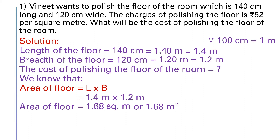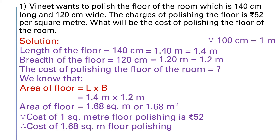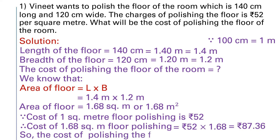So area of the floor = 1.68 m². Now we find the cost of polishing. If the cost of polishing 1 square meter is Rs. 52, then cost of polishing 1.68 square meters = Rs. 52 × 1.68 = Rs. 87.36. So the cost of polishing the floor of the room is Rs. 87.36.